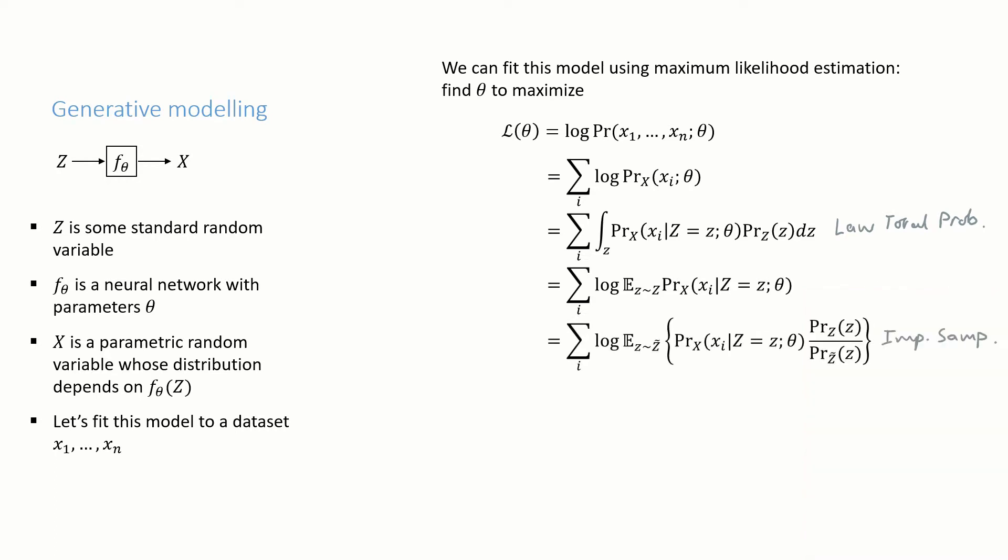The next step is the distinctive thing about autoencoders. We'd like to approximate this expectation using importance sampling. So let's do a change of variable and write it as an expectation over values little z drawn from a different distribution, the sampling distribution Z̃. Because we're changing the distribution over which we're doing the expectation, we have to put in the importance sampling correction factor, this likelihood ratio term.